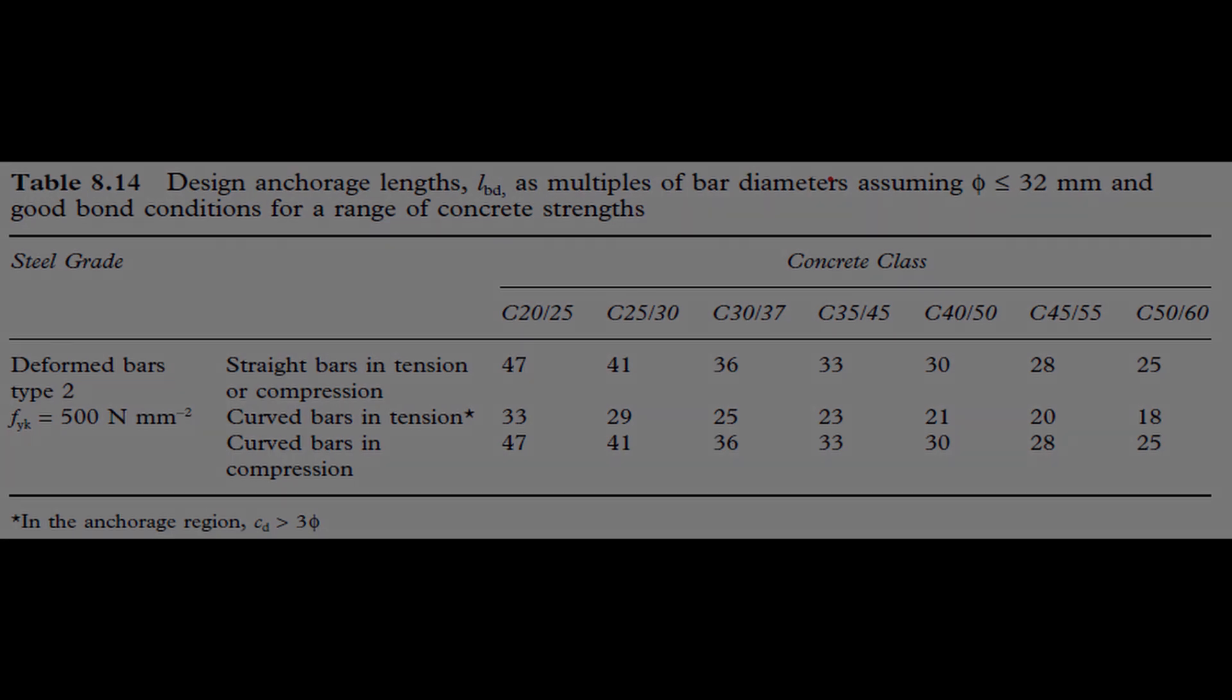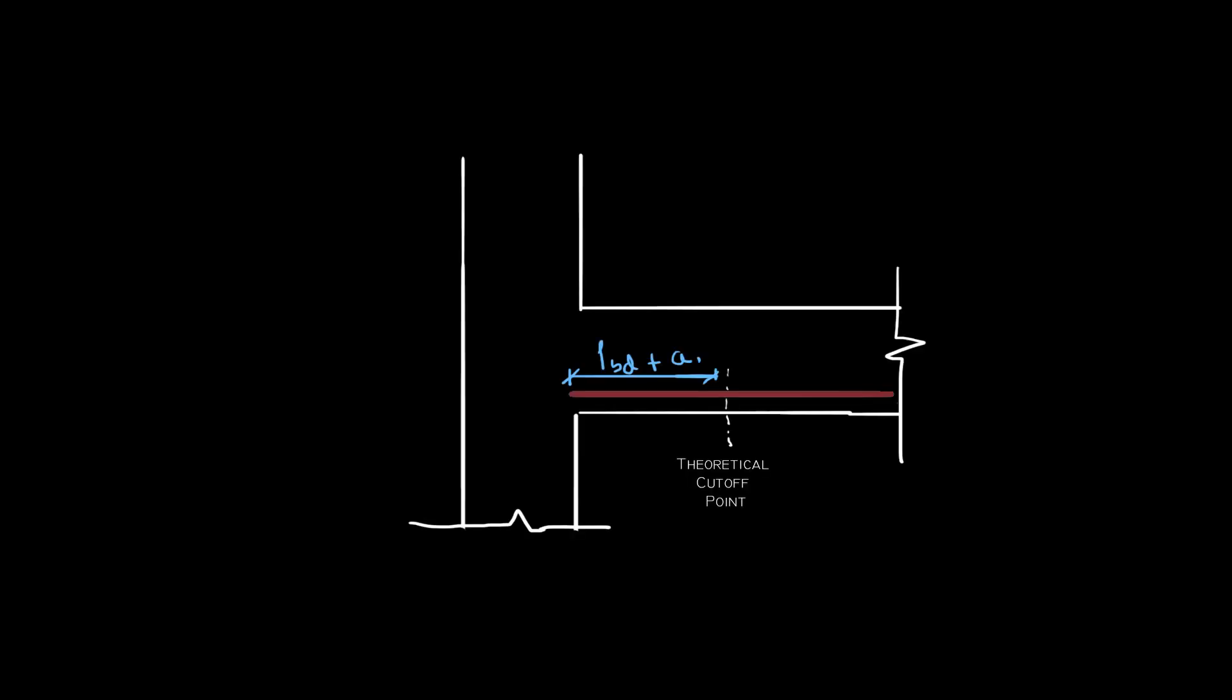Wow, that is easy! EC2 says the bar should extend LBD plus A1 beyond the point where it's needed. Usually, A1 simplifies to 1.125d, and this is to take the shear stress into consideration.